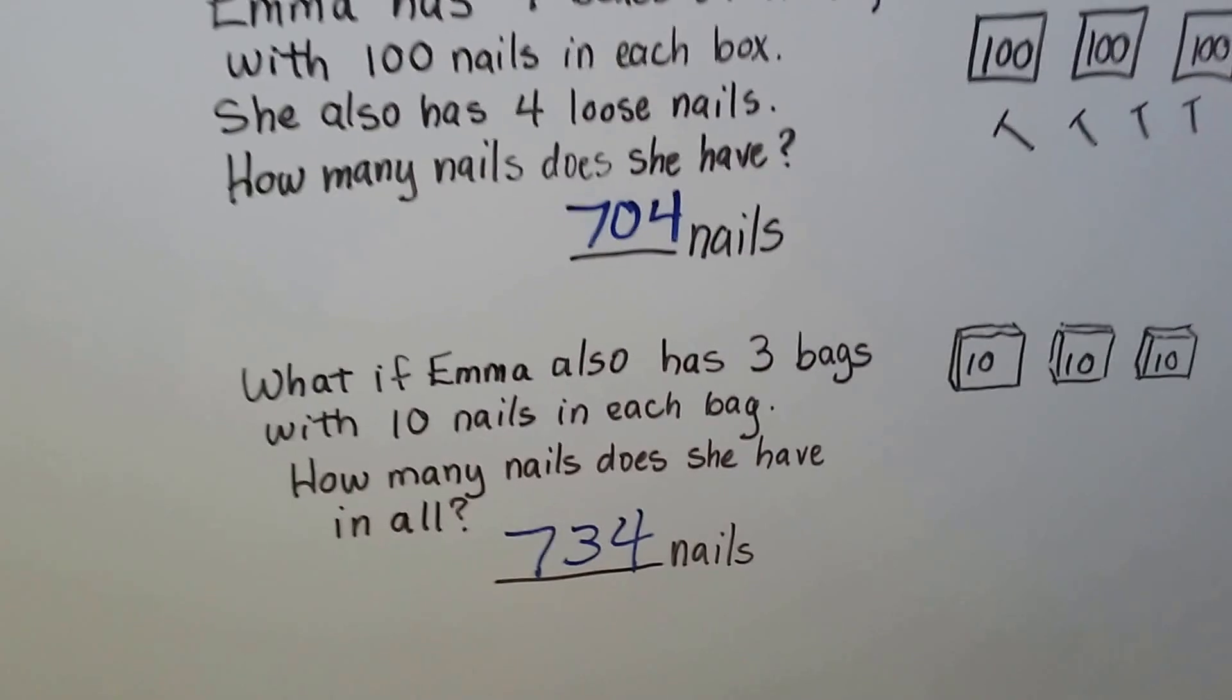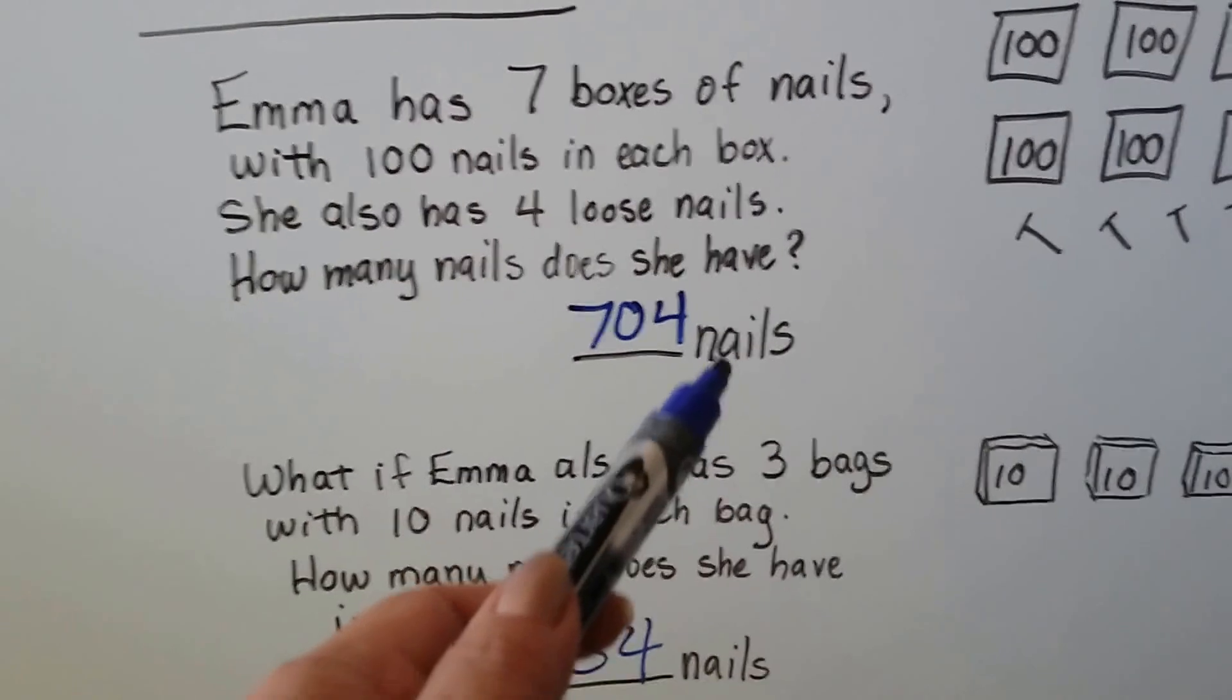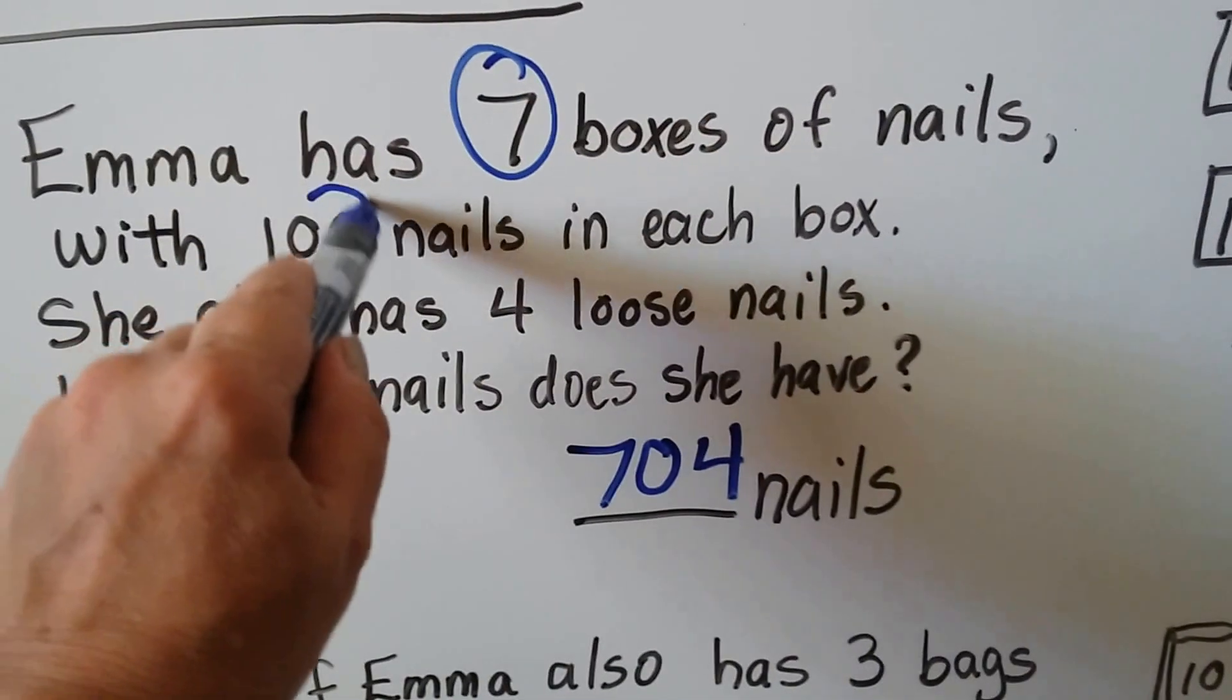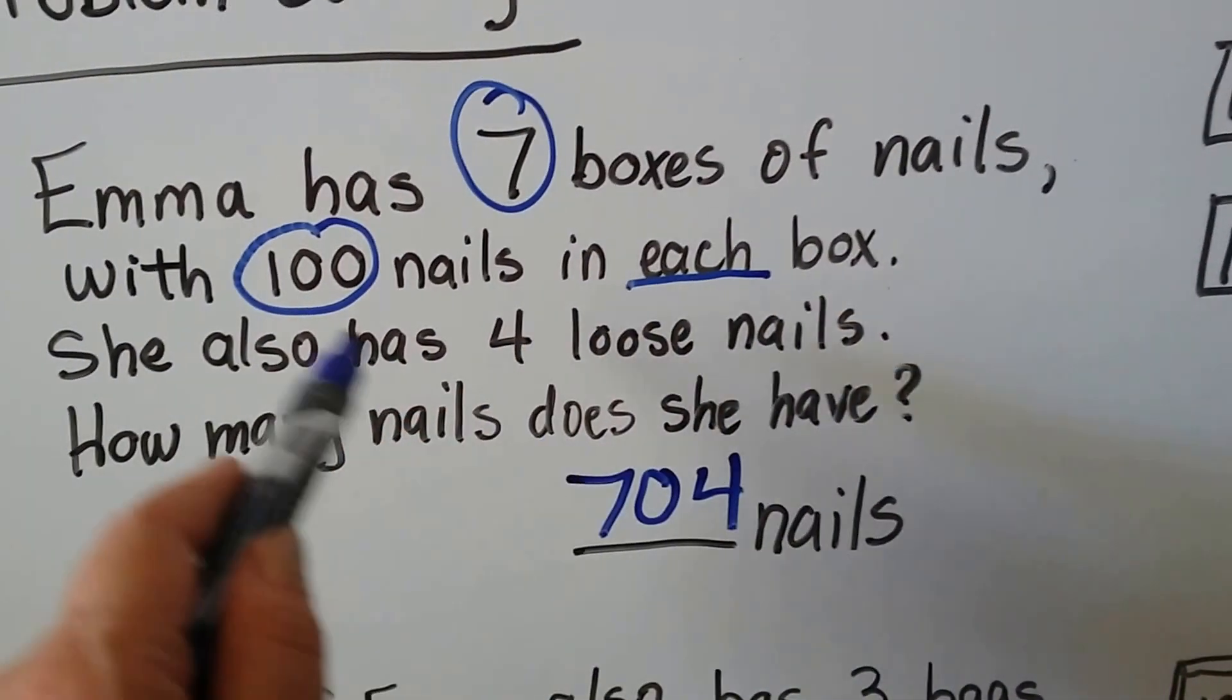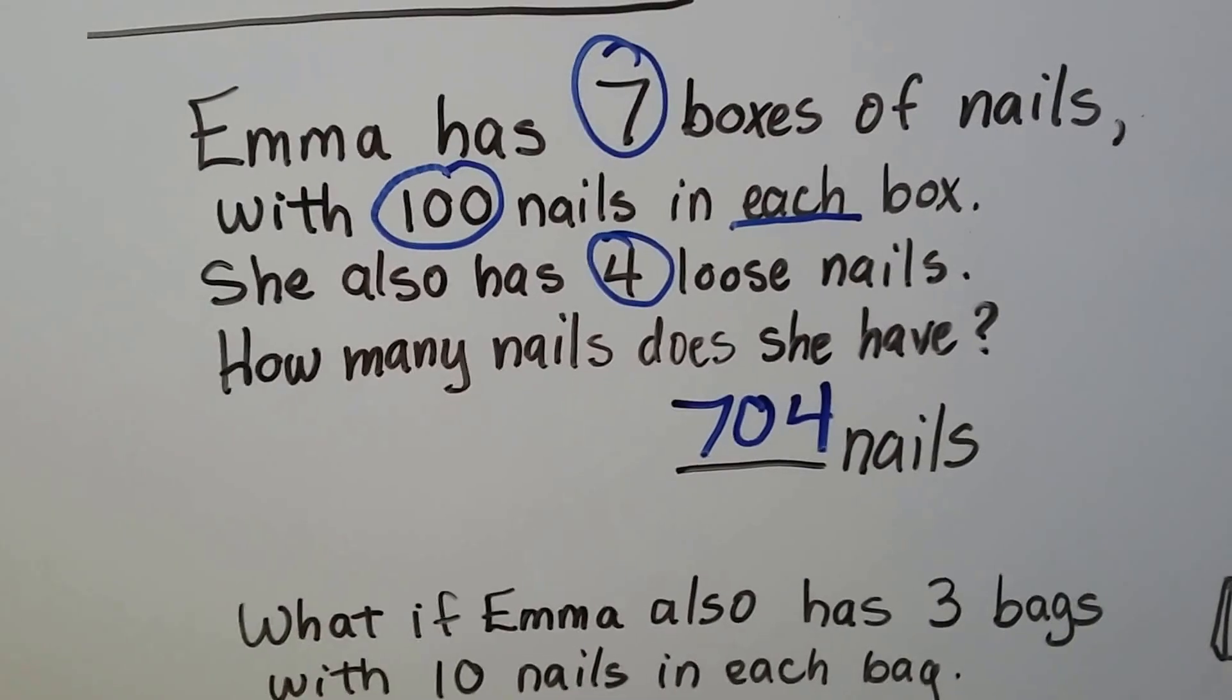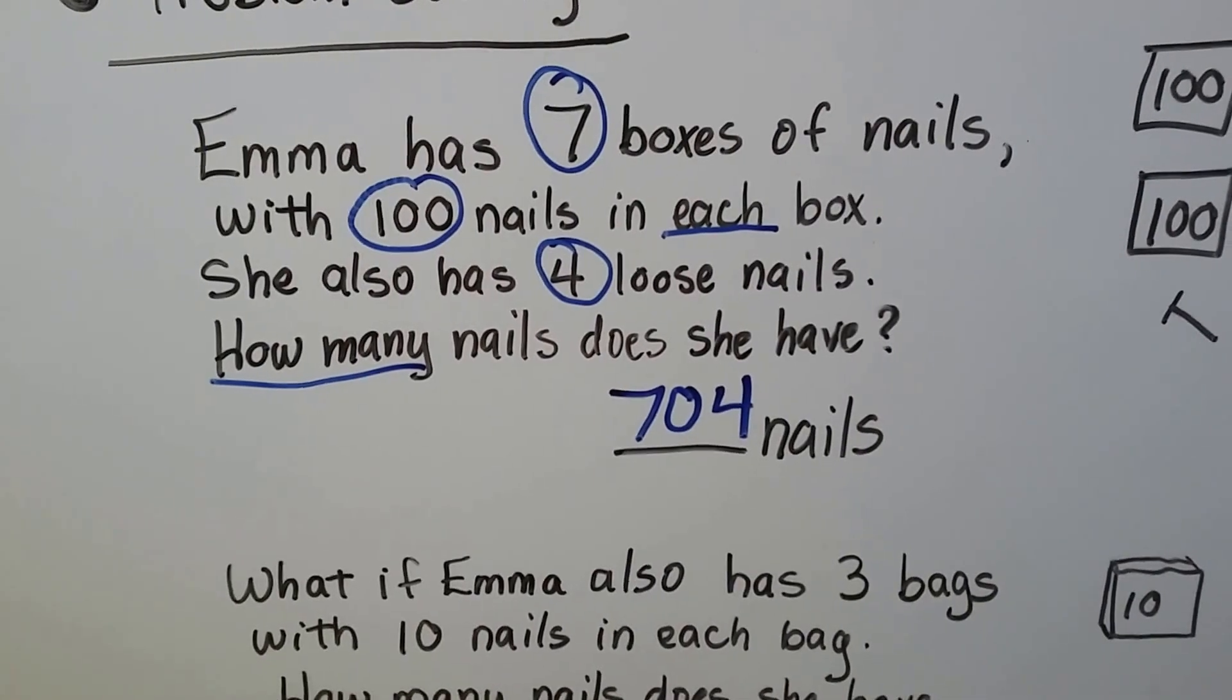Now what's really important to look at is I labeled my answer 'nails.' We looked at the important numbers. Seven, it said they each had 100. It said she also had four loose ones, didn't it? And it asked how many, so we knew we had to count these up and add them together.